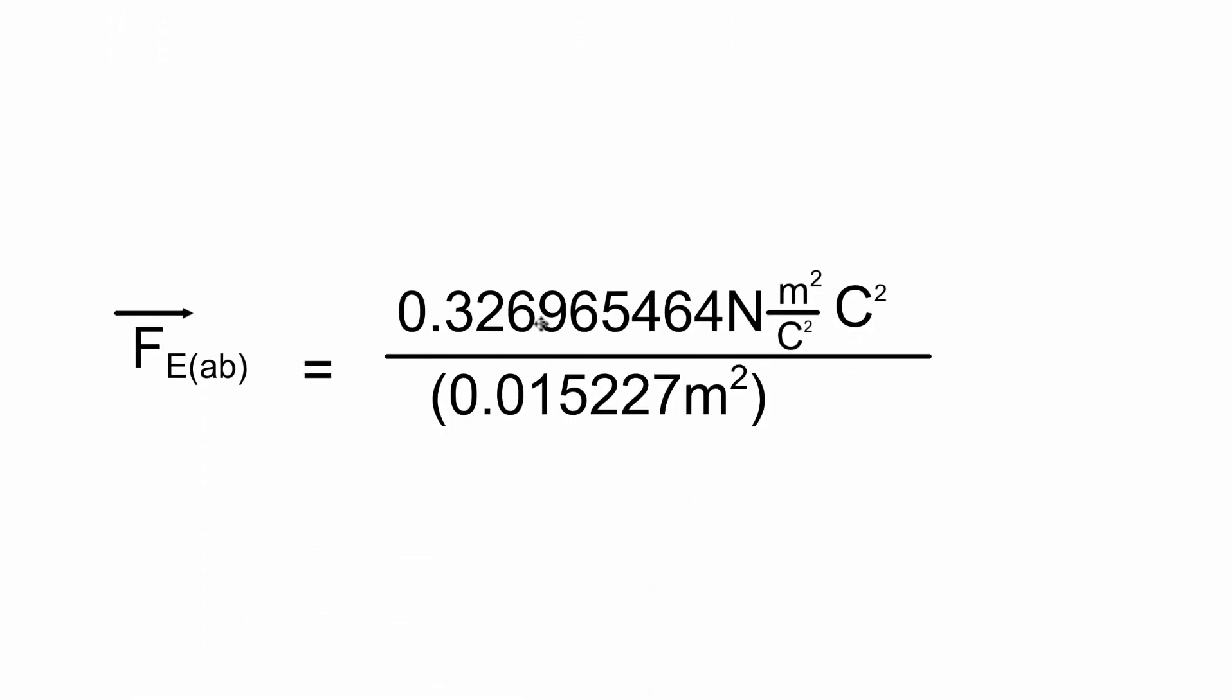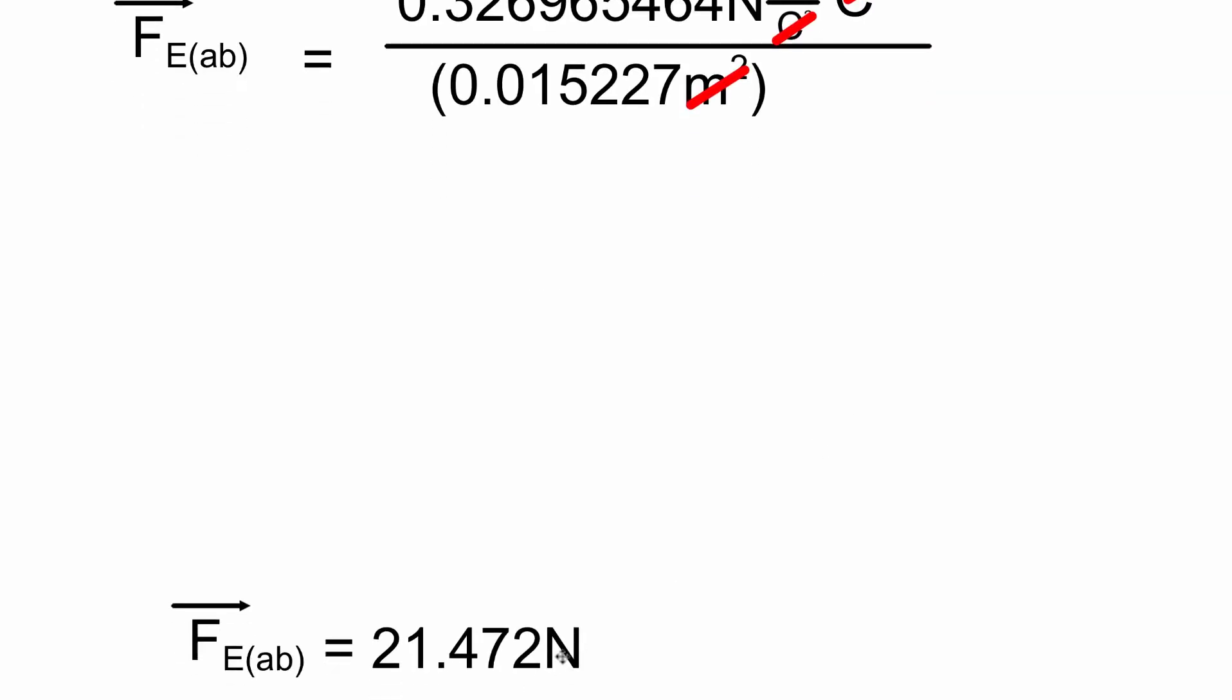Here's what we get: 0.326965464 newton meters squared per coulomb squared times the charges, which were coulombs squared. As we've seen in the first example, the coulombs cancel out and the meters cancel out. Now we're simply left with units of newtons. Take the top, divide it by the bottom. That gives us 21.472 newtons.